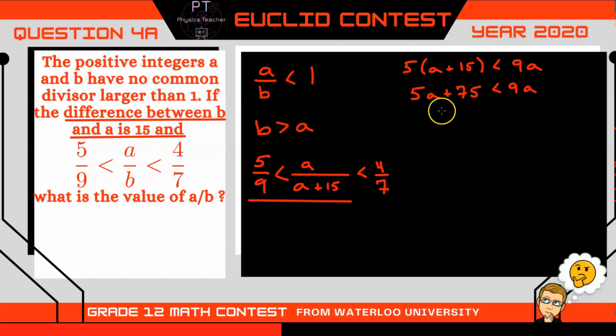Or, collecting like terms, I have 75 is less than 9A minus 5A, which is 4A. Dividing both sides by 4, I can get A is going to be greater than 75 over 4. Now 75 over 4 is simply 18.75. But since A must be an integer, then I know A is going to be greater than or equal to 19.